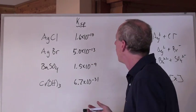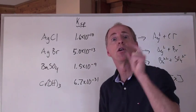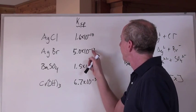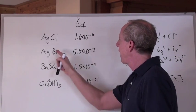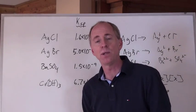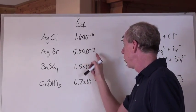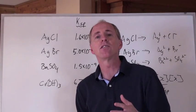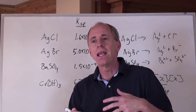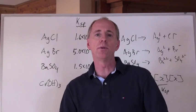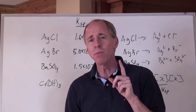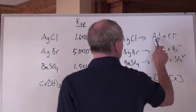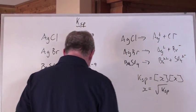Actually, don't take the square root at all — just compare the KSP values directly. Since AgBr has the smallest KSP at 10⁻¹³, smaller than all the others, that means it is the least soluble chemical. But you can only compare KSP values directly when the compounds dissociate into the same number of ions.